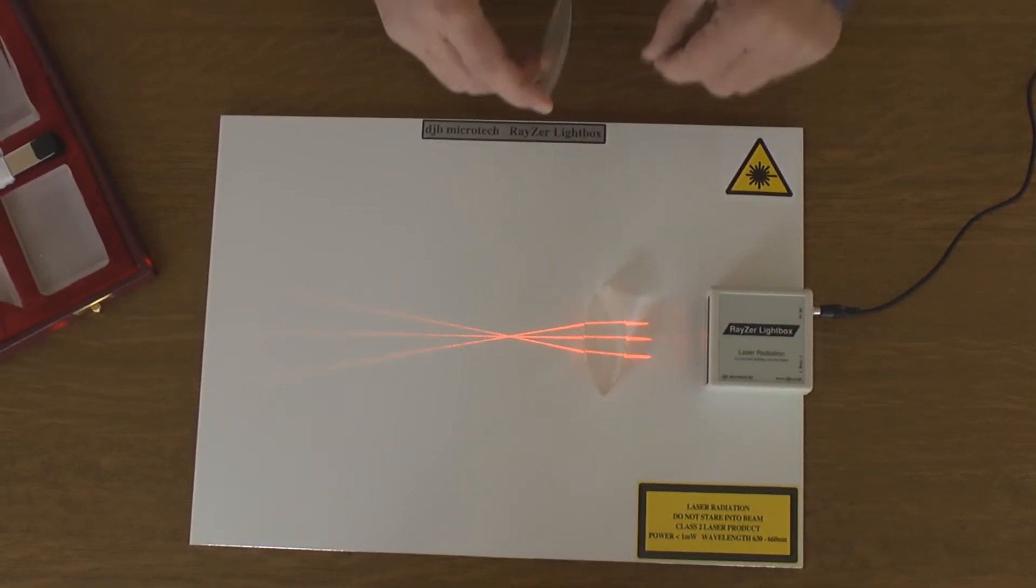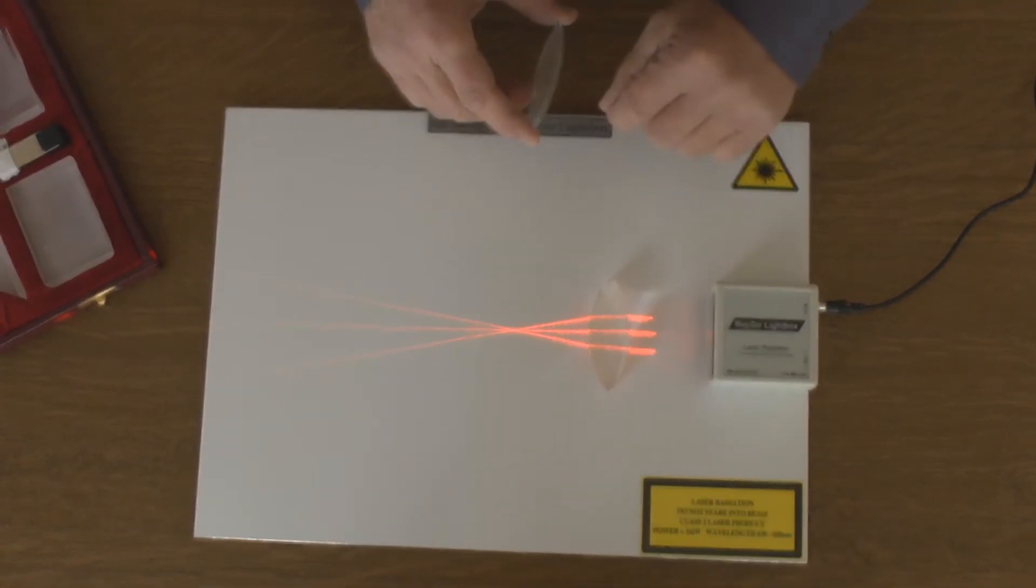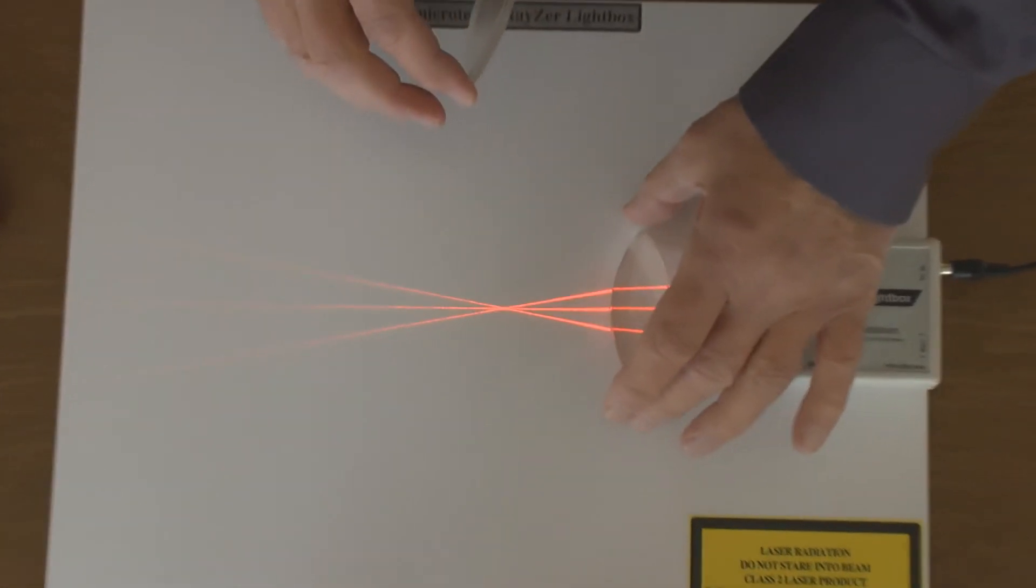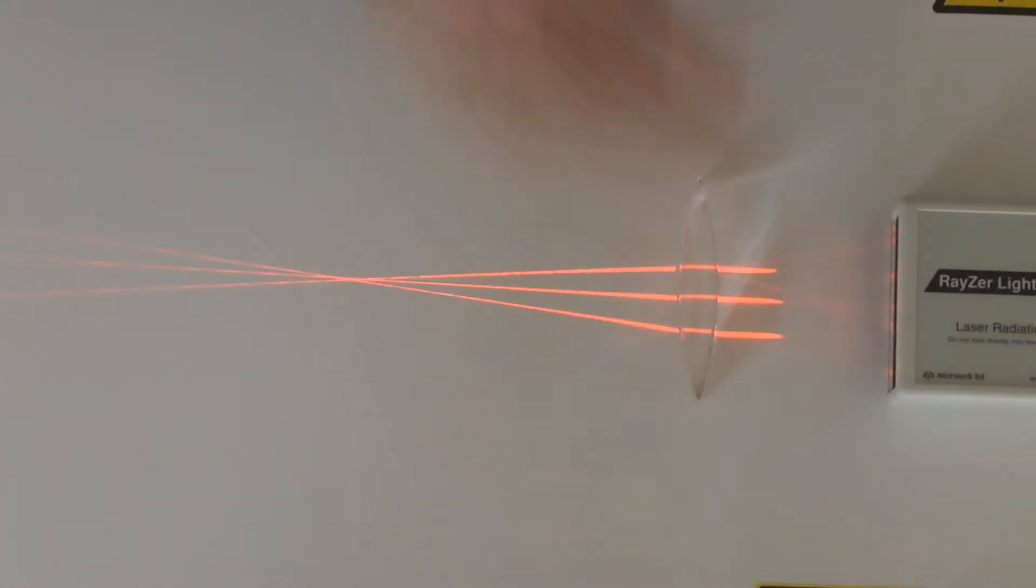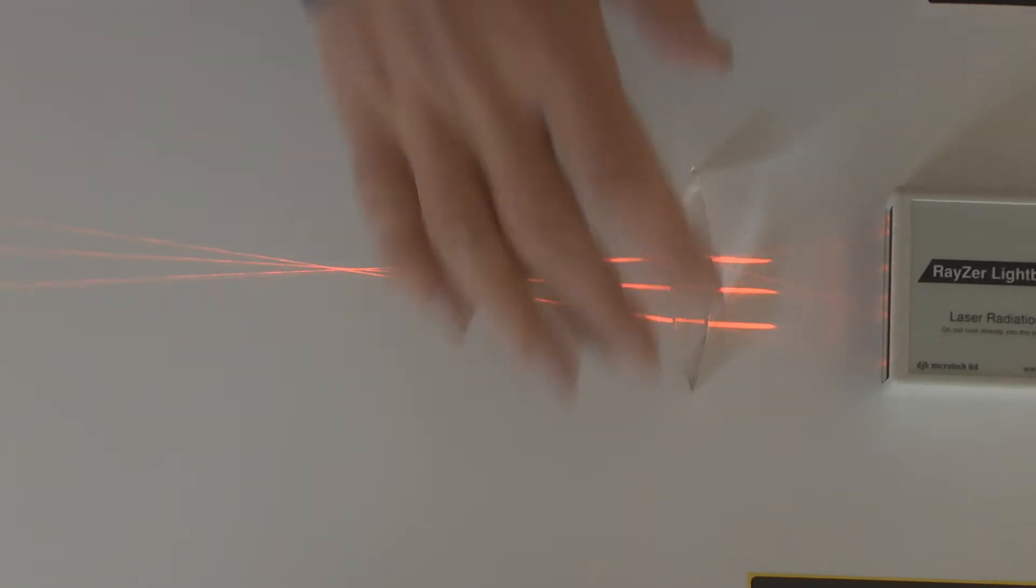First we'll show a fat convex lens and a thin convex lens, and you can see the difference in the focal length.